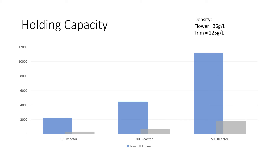When it comes to an extraction, a big detail is going to be the density of your material. For instance, flour is going to be really sparse and loose — it could be as low as 36 grams per liter. Whereas trim has a lot less space in between the bits — it's a lot denser, and so it could be as high as 225 or even more grams per liter. That has a significant effect on the holding capacity of the machine itself.